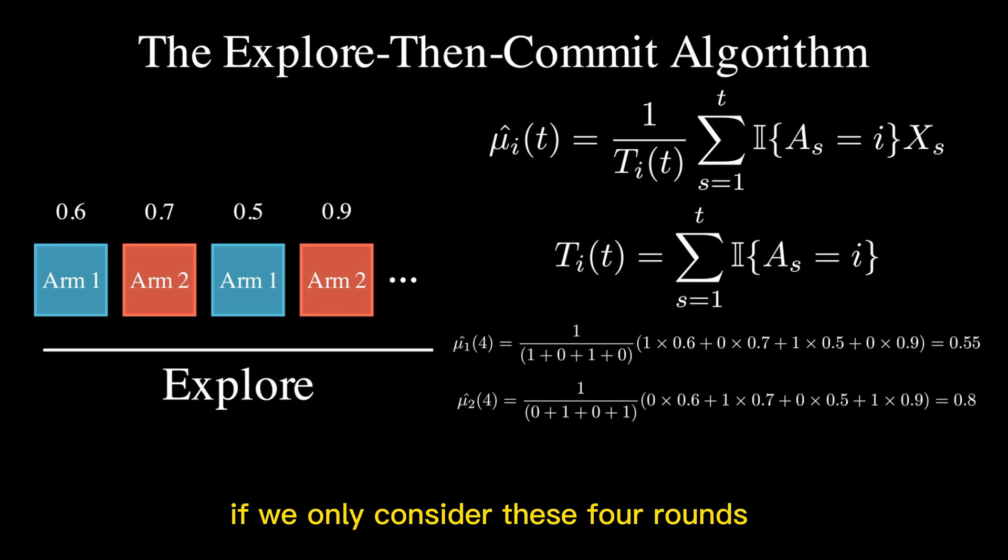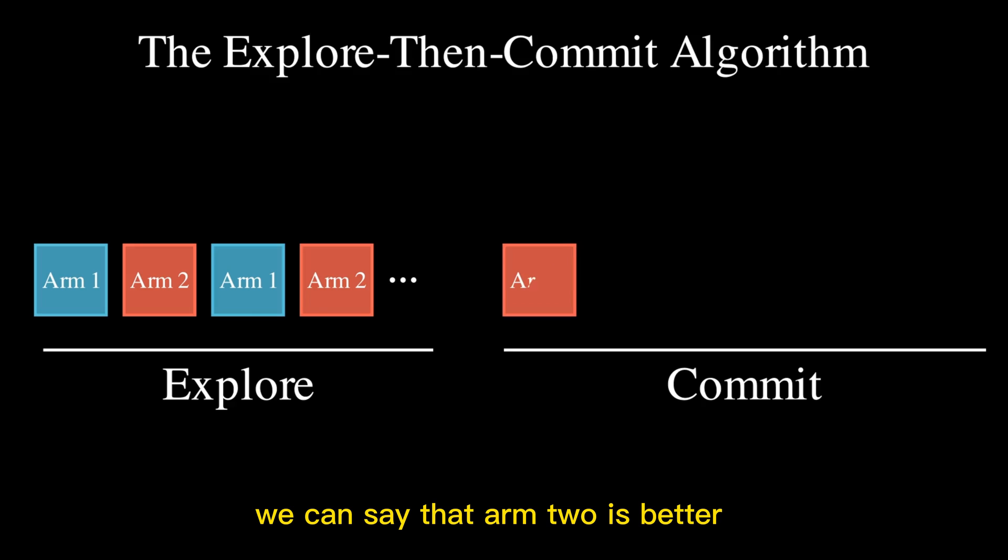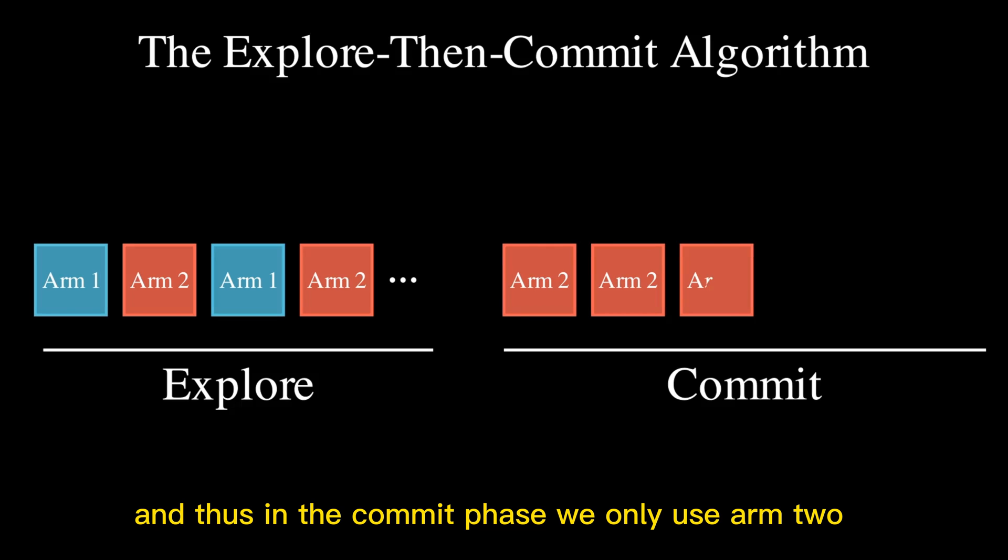If we only consider these four rounds, we can say that arm 2 is better, and thus in the commit phase, we only use arm 2.